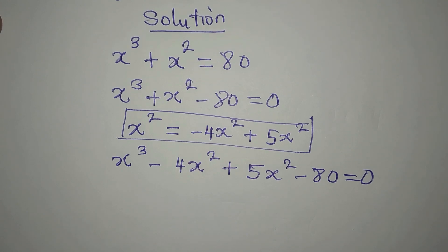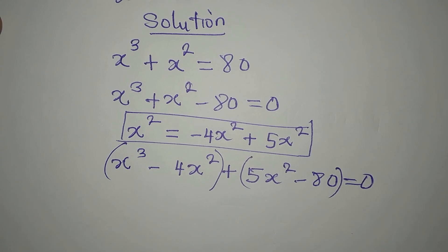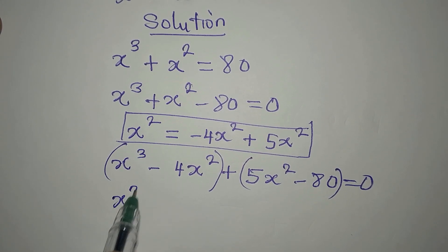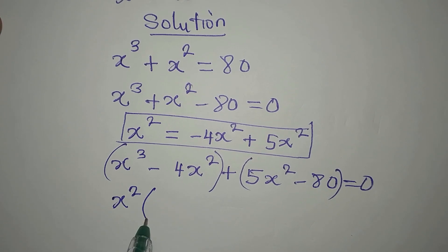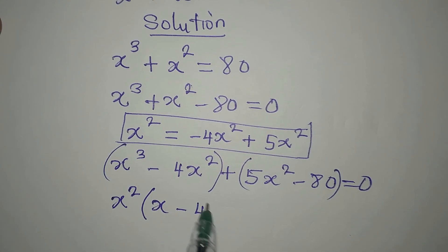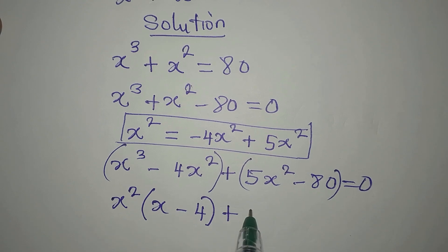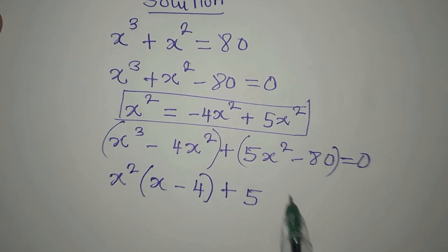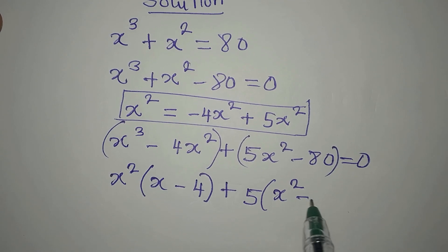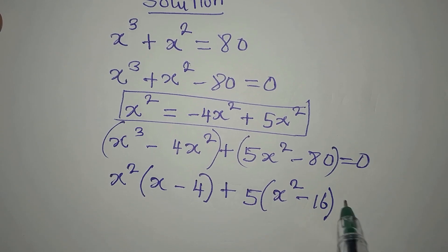Now we can group and factorize. x² is common to the first two terms, so we factor out x², giving (x - 4). Then 5 is common to the last two terms, so we factor out 5, giving (x² - 16), since 80 divided by 5 is 16. This equals 0.